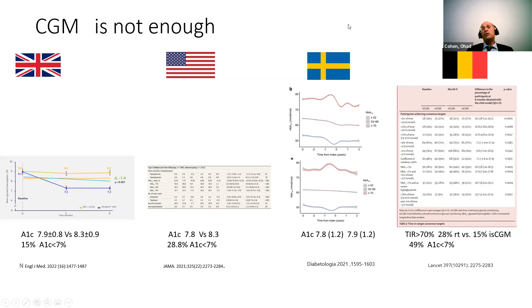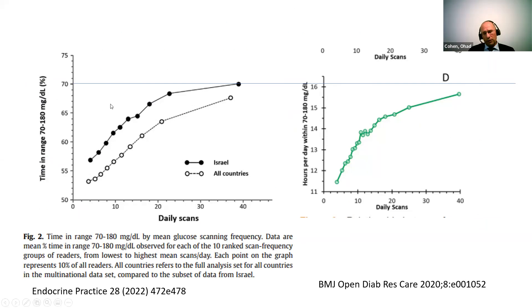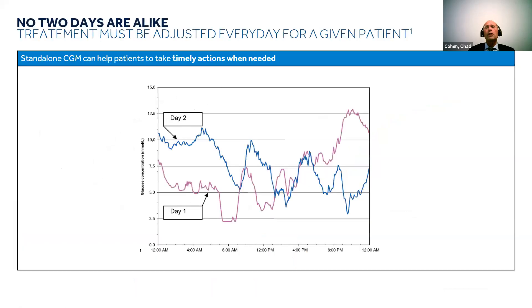The same was seen in the US and in Sweden — this is not just a local issue. Sensors, just as sensors, have limited ability to provide the outcomes we want because they only provide monitoring. Real-life data from intermittent scanning shows that even those who scan a lot get closer to 70% time in range and A1C of 7, but the majority — over 90% — stay in the time-in-range of 50s with higher A1C.